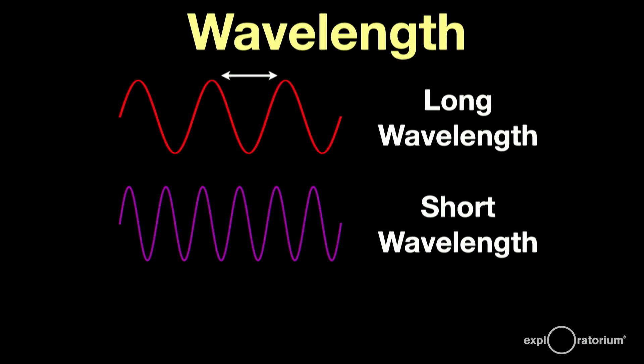If you measure the distance from peak to peak, or trough to trough, you'll get a distance called the wavelength.